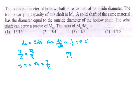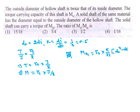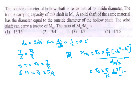T1 = tau_s × J/R. For a hollow shaft, J = (pi/32)(DO^4 - DI^4), and R = DO/2. Substituting, T1 = tau_s × (pi/16) × DO^3 × (1 - k^4).